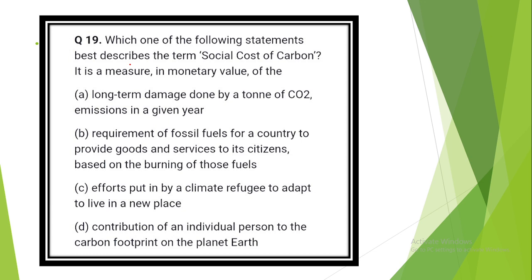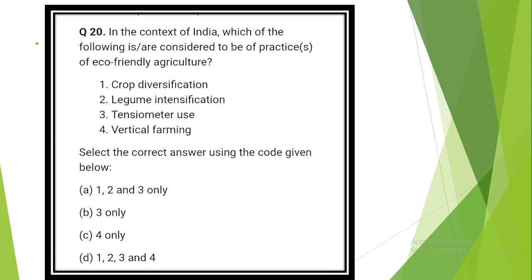Which of the following statements best describes in terms of social cost of carbon? It is a measure in monetary value of the long-term damage done by ton of carbon dioxide emission in a given year. In the context of India, which of the following are considered practices of eco-friendly agriculture? The answer is option D: All are correct. Crop diversification, legume intensification, tensiometer use, vertical farming.